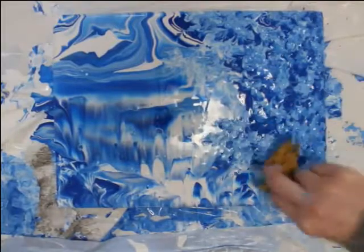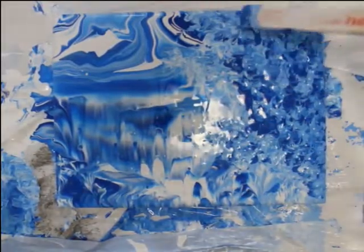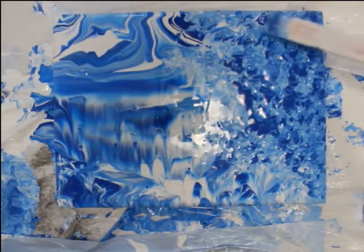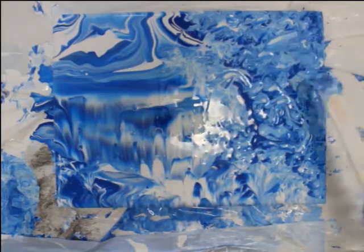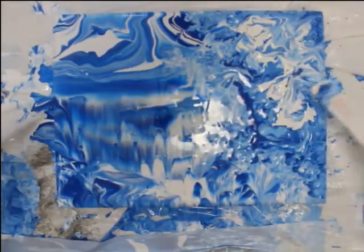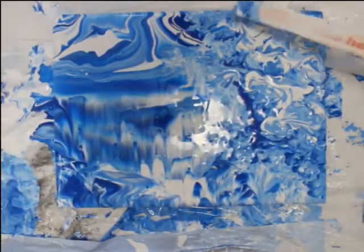With my sponge, I dabbed some of the blue paint and with my stick, weaved in some of the white paint to create even more texture and dimension with these two colors. More shades.